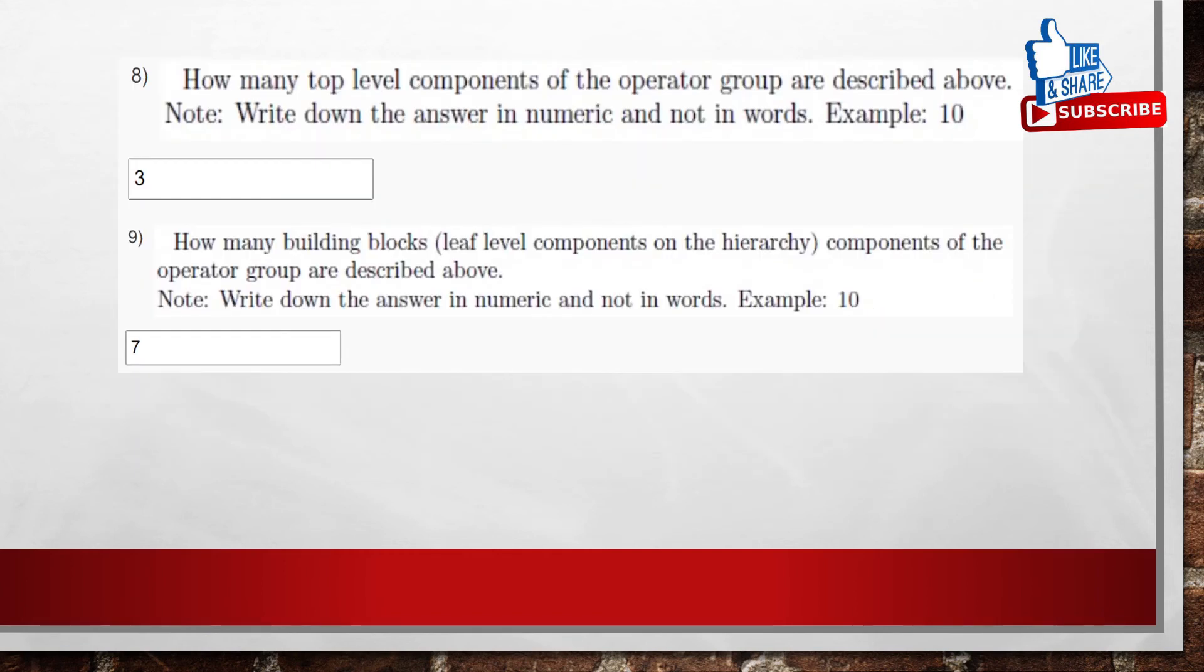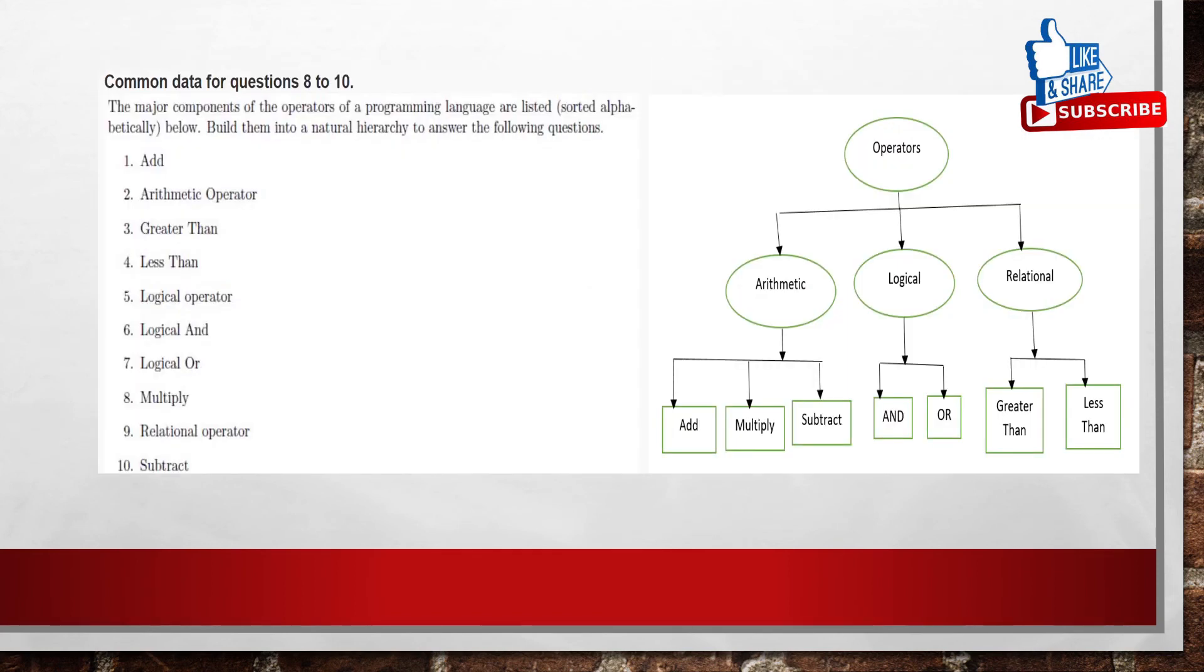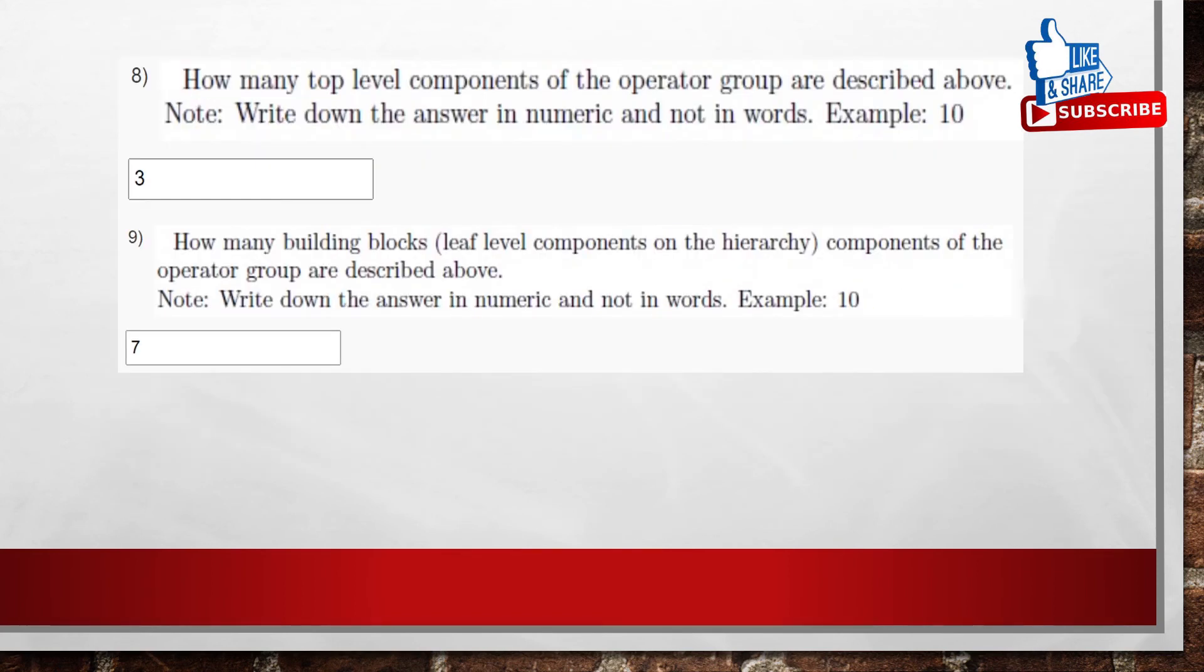So coming to the 8th question, how many top level components of the operator group are described above? So what are the top level components means are arithmetic, logical and relational. So there are 3 components.